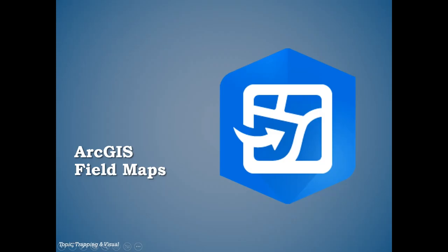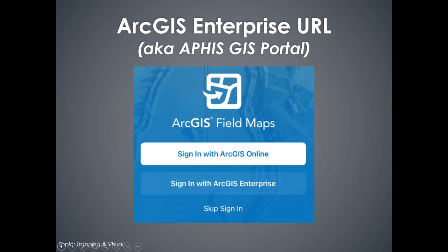For ArcGIS Field Maps, there is a user guide and a 10-video self-paced series you should complete as a prerequisite. When you first open Field Maps, you get a sign-in screen. As federal employees, our data is in an enterprise system, so we always tap 'Sign in with ArcGIS Enterprise,' then choose 'Specify a new URL' to type in the portal URL manually.